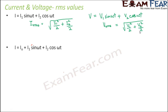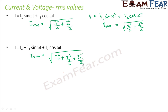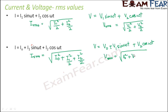If current has an additional DC term: I = I₀ + I₁ sin(ωt) + I₂ cos(ωt), then I_RMS = √(I₀² + I₁²/2 + I₂²/2). The tip here is that since I₀ has no sine or cosine term, it is not divided by 2. Similarly, if voltage is V = V₀ + V₁ sin(ωt) + V₂ cos(ωt), then V_RMS = √(V₀² + V₁²/2 + V₂²/2).